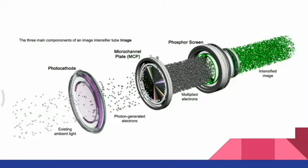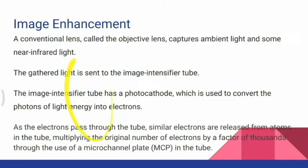So there is existing ambient light always in our atmosphere. This lens we have will take in the existing ambient light and then it will be shown onto a photocathode.